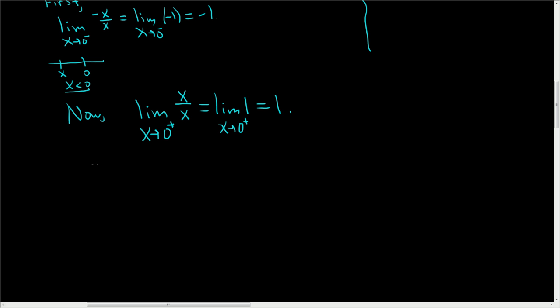Since the one-sided limits are not the same, we end up with negative 1 on the left and 1 on the right. So our regular limit does not exist.